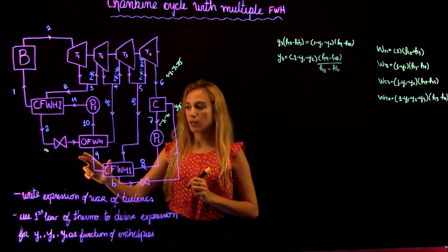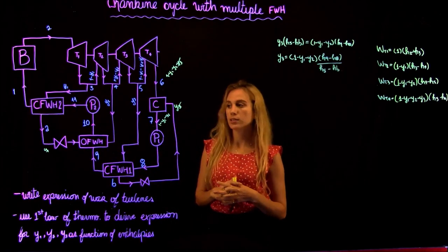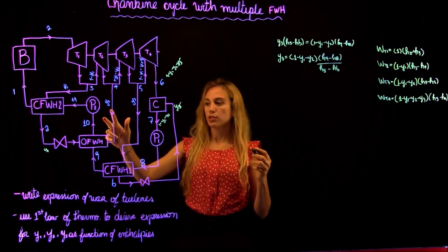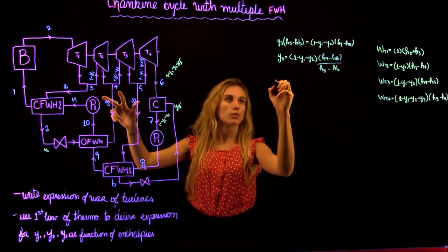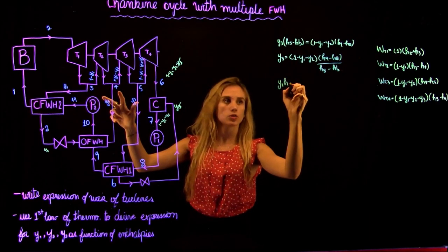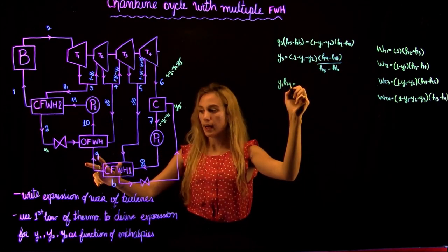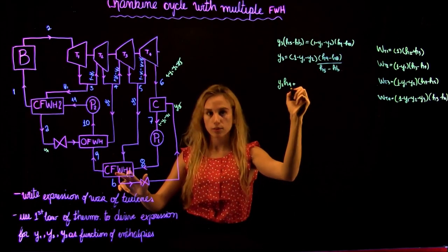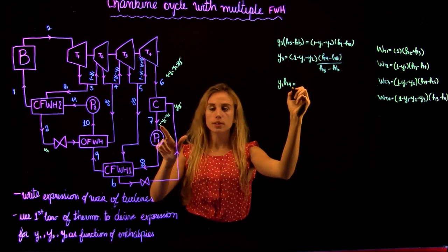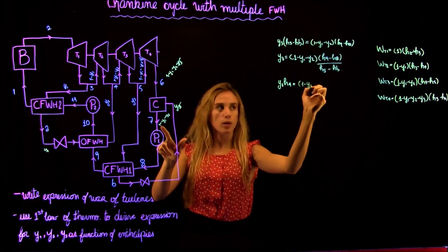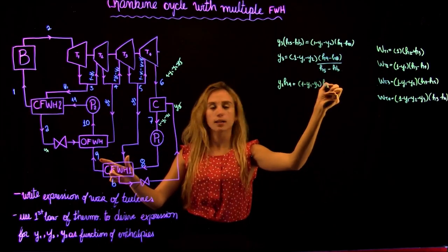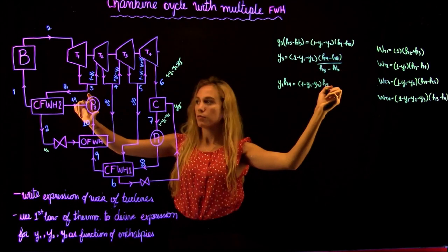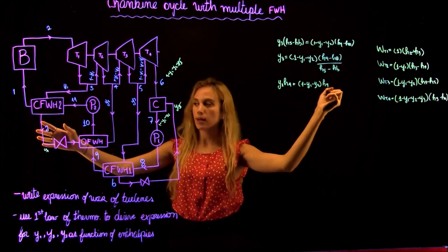Now we look at the open feed water heater. In this case we do have mixture of the fluids, so we have three inputs and one output. Writing the energy equation: we have Y2 coming from state 4, contributing Y2·H4. Then state 9 comes in — with the same mass fraction as at 8 since that heater is a cross feed water heater — contributing 1 minus Y1 minus Y2 times H9. Then from point A we have a cross feed water heater, so the flow comes from state 3 with mass fraction Y1, leaving at Y1·HA.